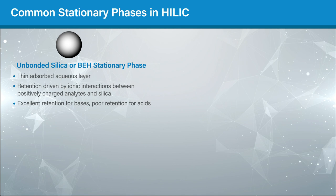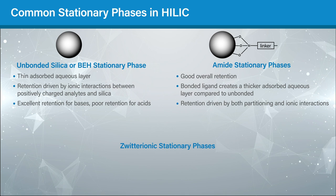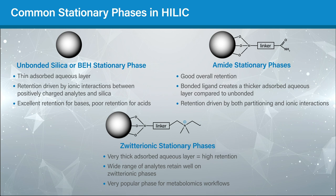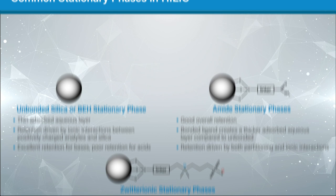which acts as a cation exchanger, amide materials which are neutral yet highly polar, and zwitterionic materials which contain both positively and negatively charged groups in a one-to-one molar ratio. Each of these have their own strengths and weaknesses when analyzing different mixtures of analytes.